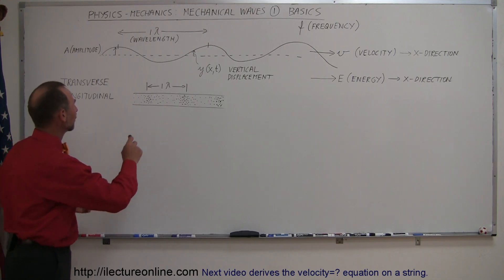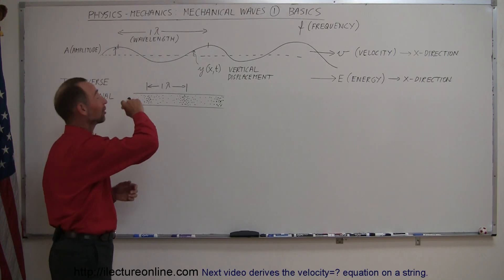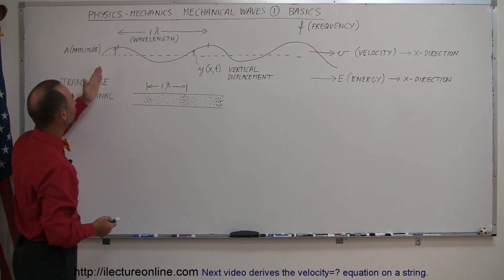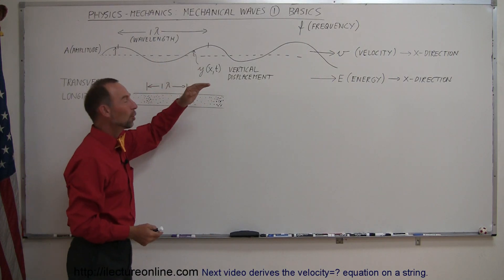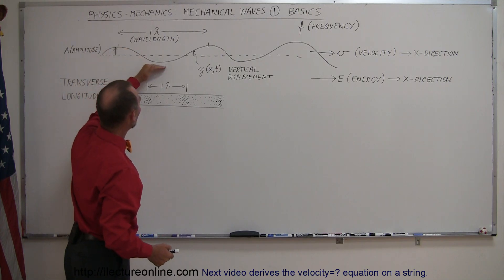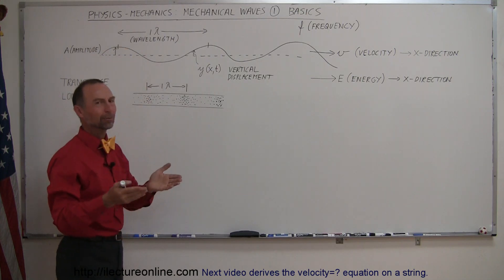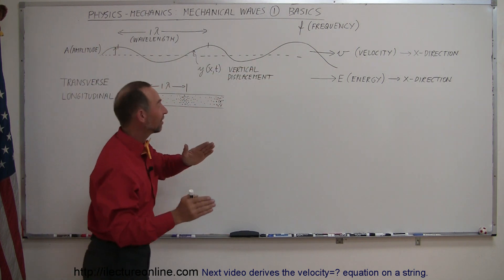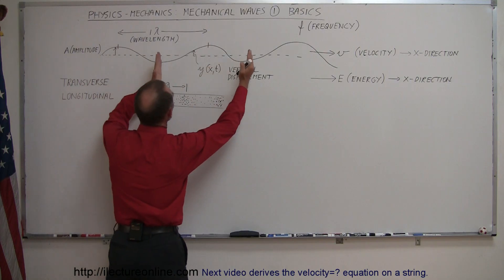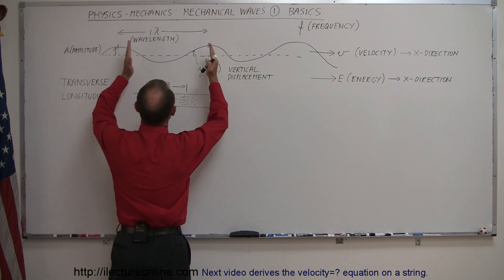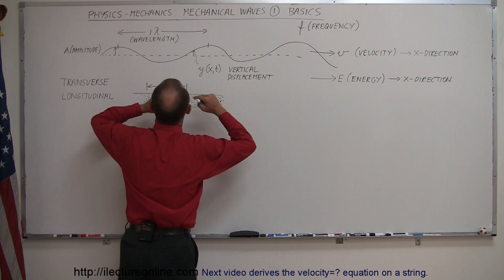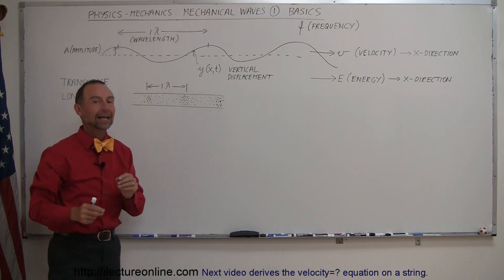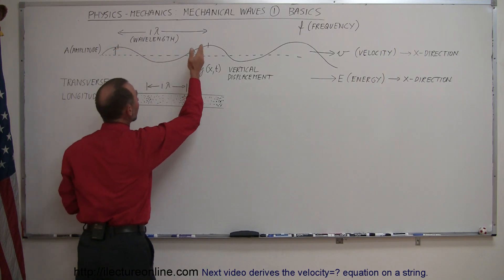So first of all, I drew something on the board here that looks like a wave. And waves have wavelengths. Notice that these are the peaks of the wave. This is called the trough, just like what pigs eat out of. So the peak, the trough, the peak, the trough, peak, trough. The distance between any two peaks or any two troughs or any two similar points on the wave is called the wavelength. And we use the Greek letter lambda to indicate that. So it's basically a distance from one peak to the next.